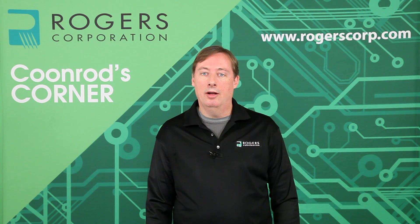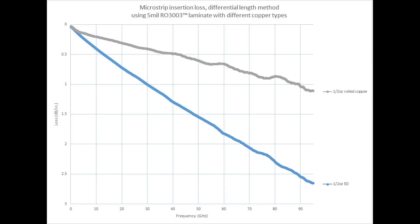Now let's look at some measured data on the RO3003 materials. The graph shows insertion loss of 5 mil RO3003 material in a microstrip transmission line format, comparing two different types of copper. The gray curve shows circuits using rolled copper, and the blue curve shows circuits using standard ED copper. There is a significant difference in loss performance — rolled copper gives much lower insertion loss because its smooth surface produces very little conductor loss, which is important at higher frequencies such as 77 gigahertz.